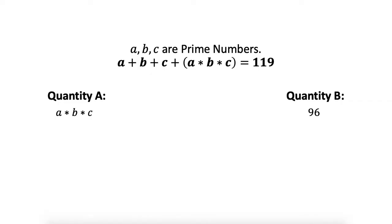This is a bit tricky question — just pause the video and try to solve it on your own. The conventional way is by assuming values and trying to prove the condition that a plus b plus c plus abc equals 119. But that is a bit time-consuming. Let's try to form a generic way to solve this question efficiently and quickly.